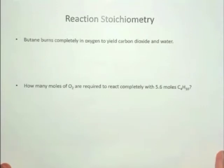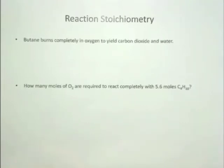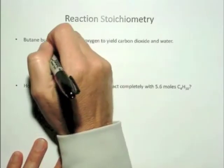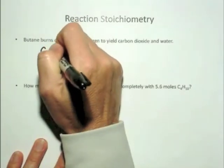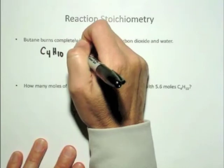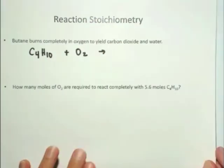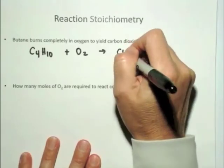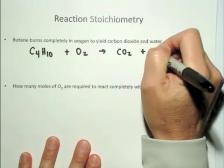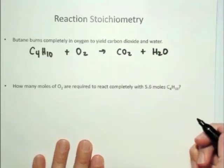What you're going to want to do is, by this point, you ought to be able to write down the chemical reaction from these words — you know all these molecules — and balance it. Butane is a hydrocarbon with four carbons, C4H10, burns completely in oxygen to yield carbon dioxide and water. That's your combustion reaction that we've looked at a lot this semester.